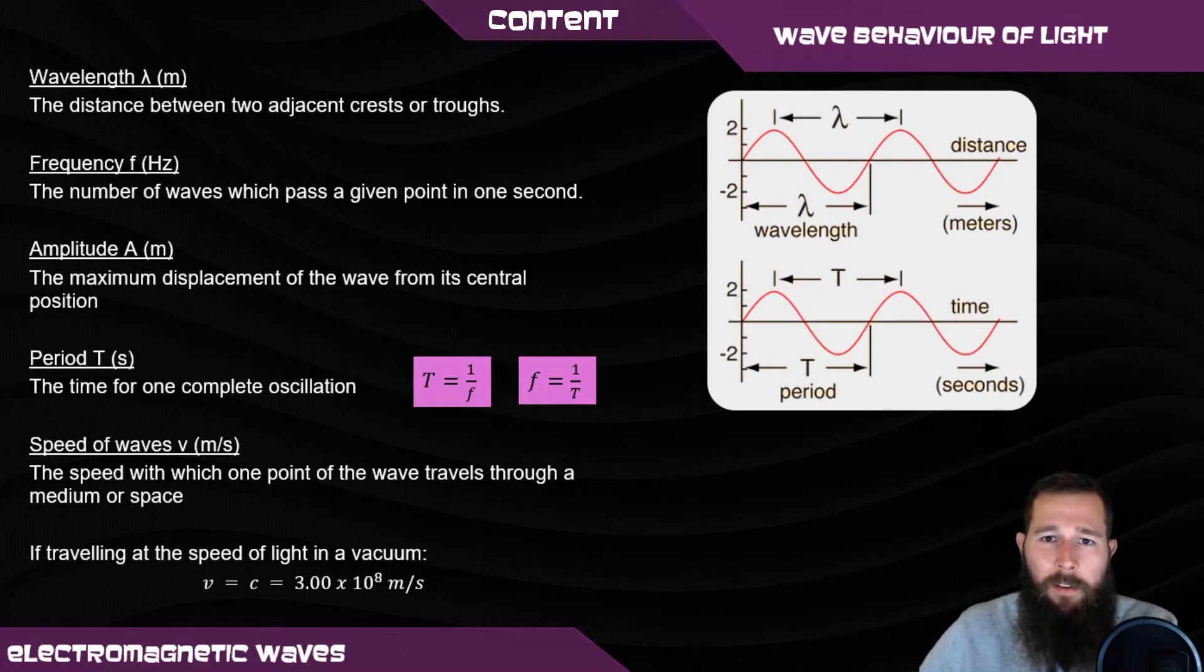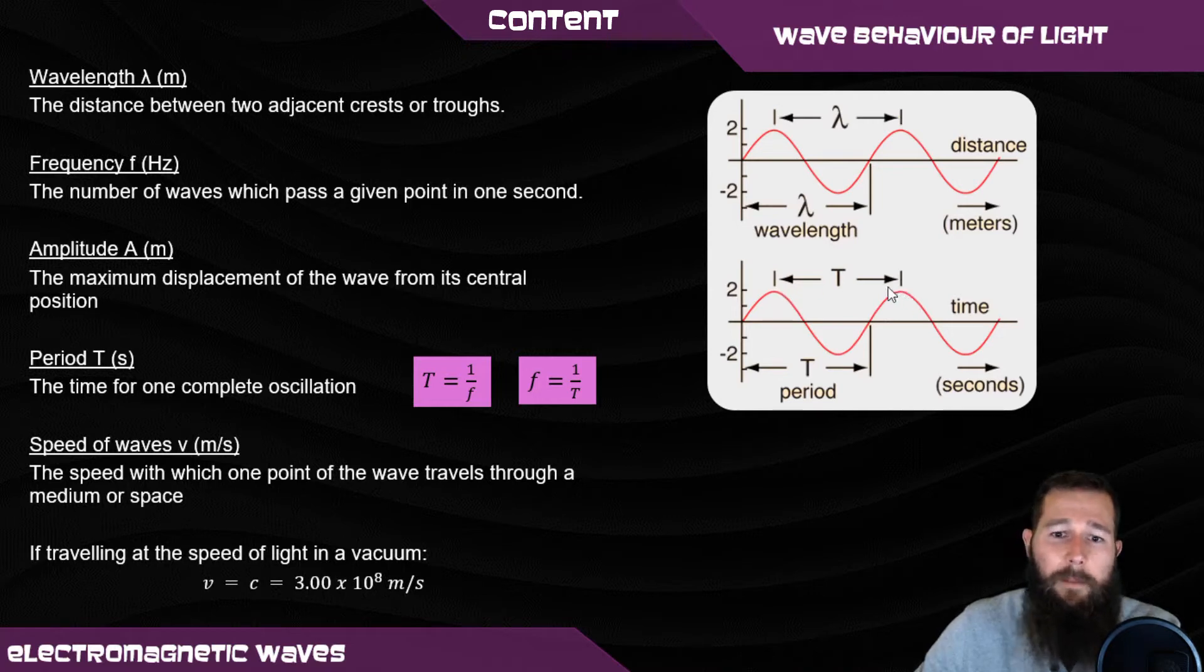It's important to be careful when you look at diagrams for waves and notice what the axes are telling you. In this top one here, the horizontal axis is distance, whereas on the bottom one the horizontal axis is time. So if you measured the point from here to here, because it's a distance axis, that would make it the wavelength. However, if you looked at the time axis, if you measured from here to here, that's not distance anymore, that's time. So that would be the period of the wave.